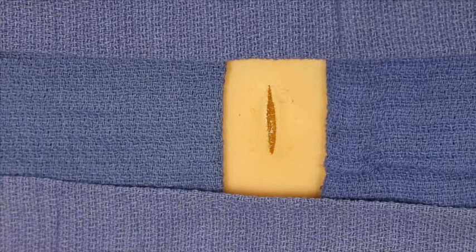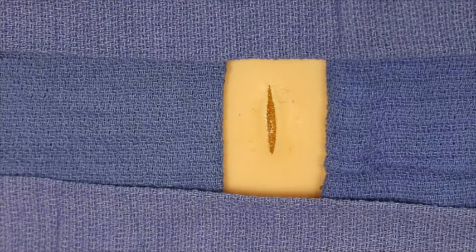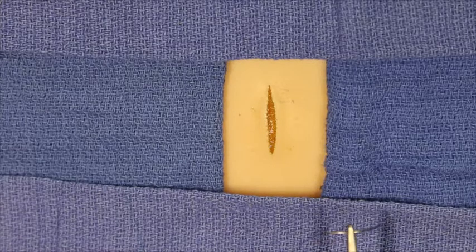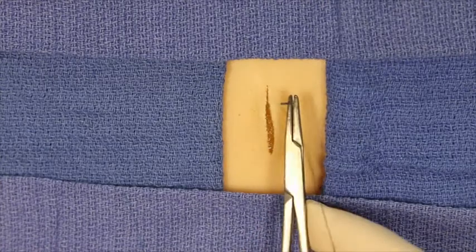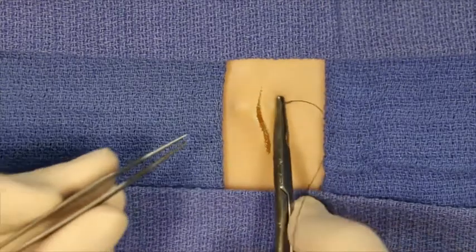The locking horizontal mattress suture is another technique that is used occasionally. The needle is inserted again at 90 degrees exiting on the contralateral side.